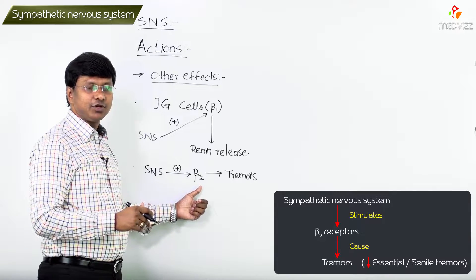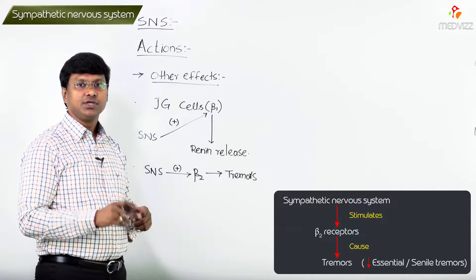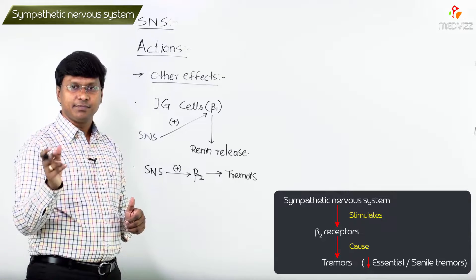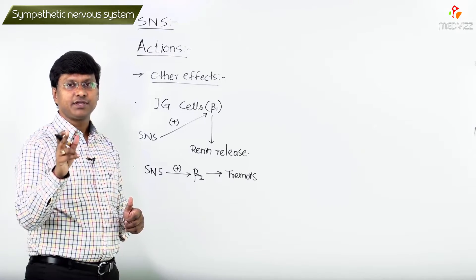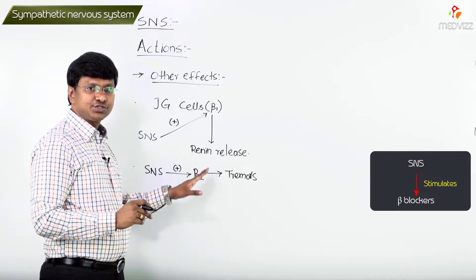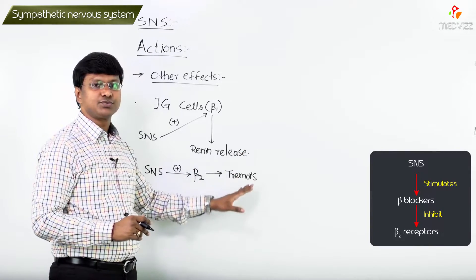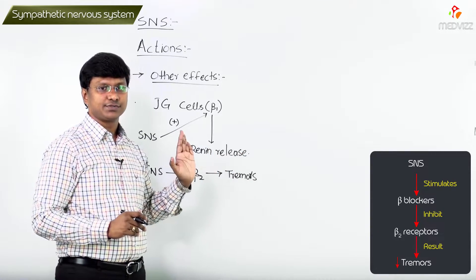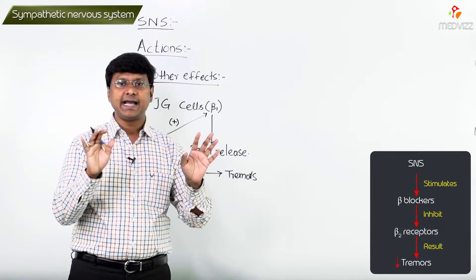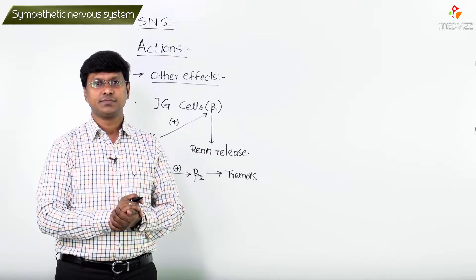Whenever you give beta blockers, the tremors will be reduced. What is the principle? Because whenever you are giving beta blockers, the beta-2 receptors are inhibited and thereby the tremors will be reduced. This is completely about the actions of the sympathetic nervous system.